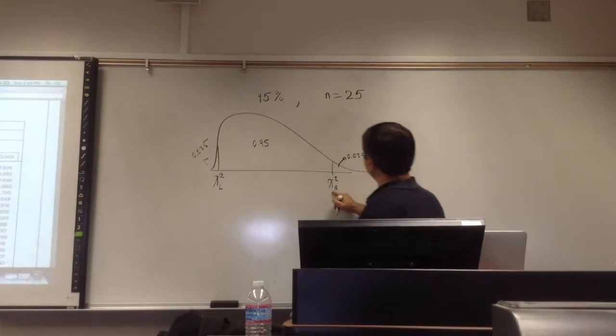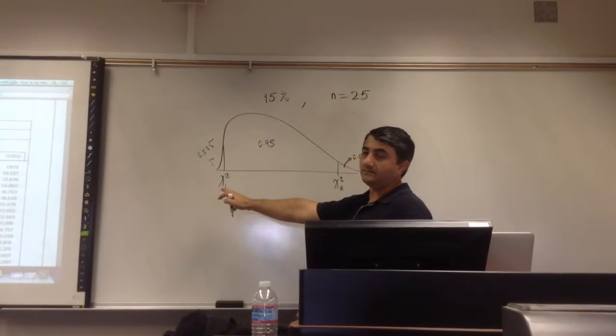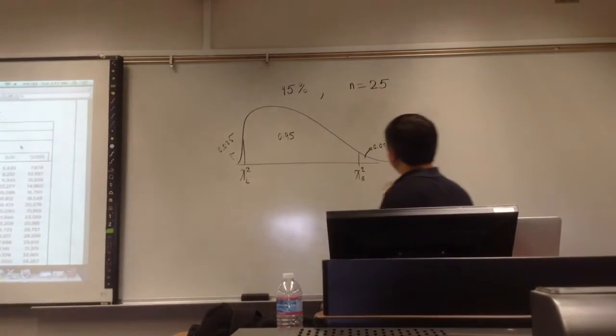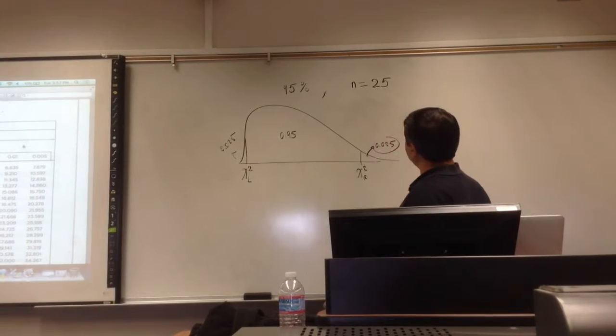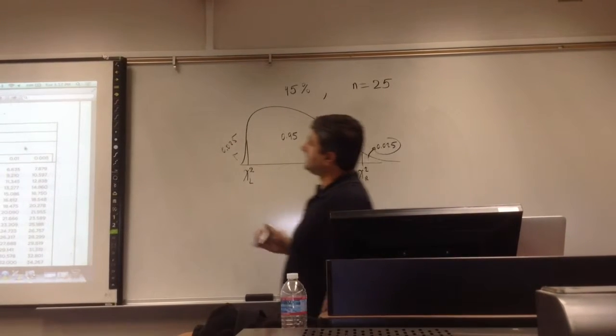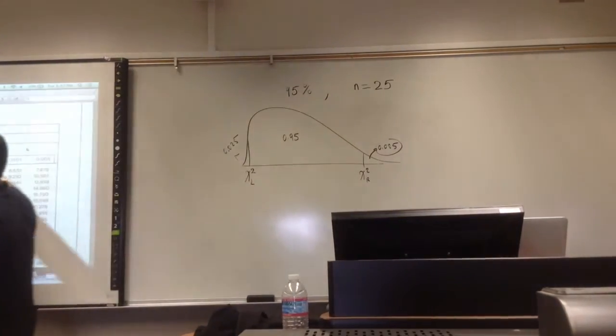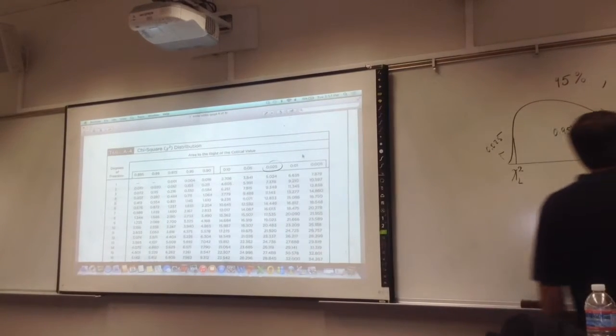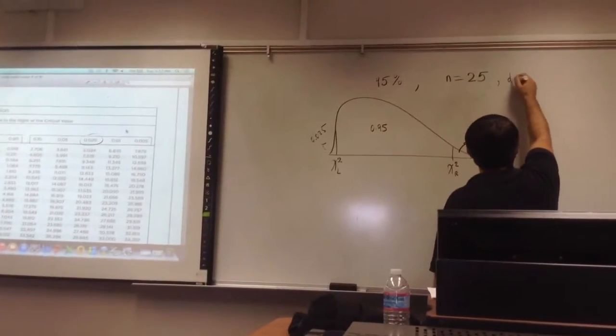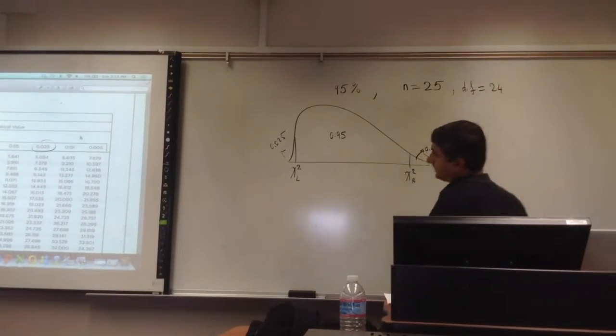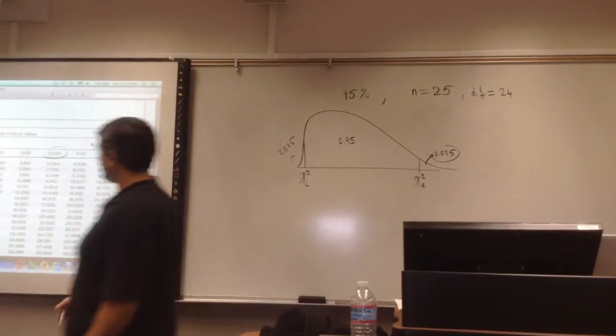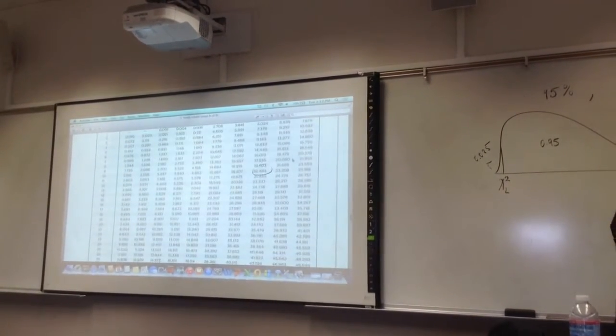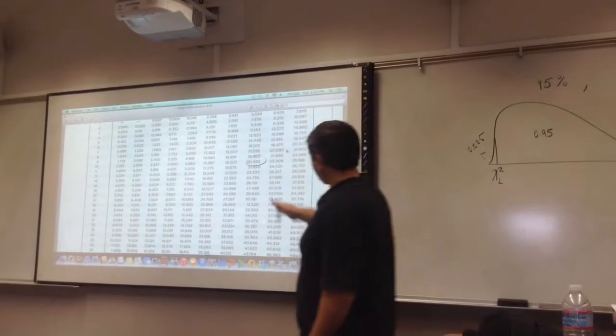Now to find the critical value, we have two of them. Remember, like the z, right? We have two critical values, one is on the left, one is on the right. Now we're going to locate this in the top row, which is right here. Agree? And with n equals 25, so what's the degrees of freedom? 24. So first we're going to find the 24 degrees of freedom and then read the value.